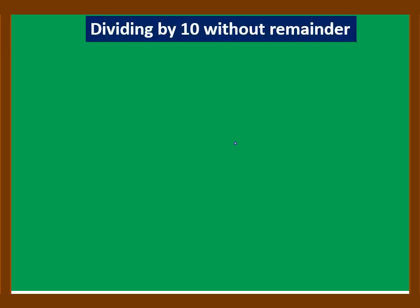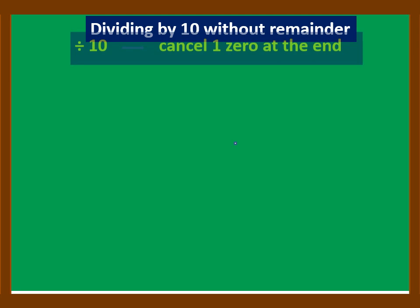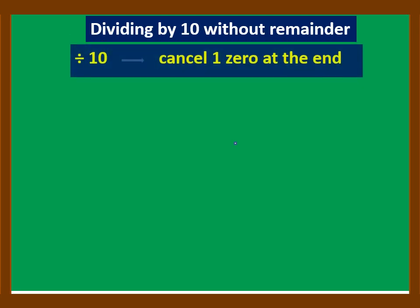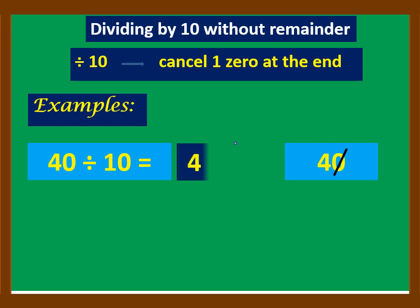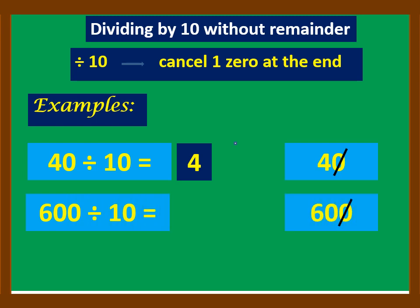In dividing by 10 without remainder, we simply rewrite the number and cancel or remove one zero at the end. Example: 40 divided by 10 — rewrite 40 and cancel zero, so the answer is 4. 600 divided by 10 — rewrite 600 and cancel one zero at the end, and the answer is 60.